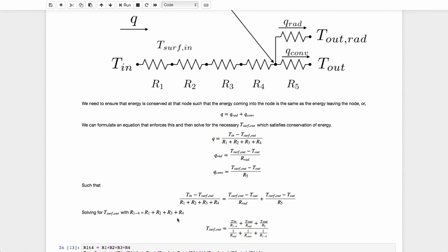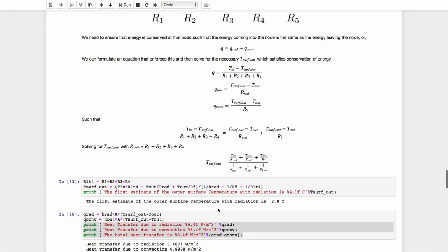And from that, let's solve for the outer surface temperatures, rearranging this equation and just noting that R1 to 4 is the sum of R1, R2, R3, and R4. So implementing that,